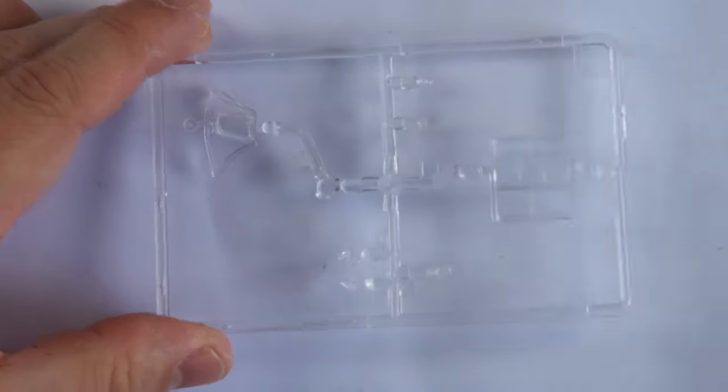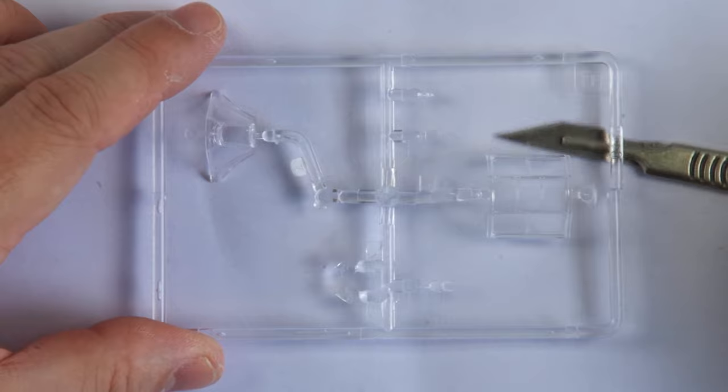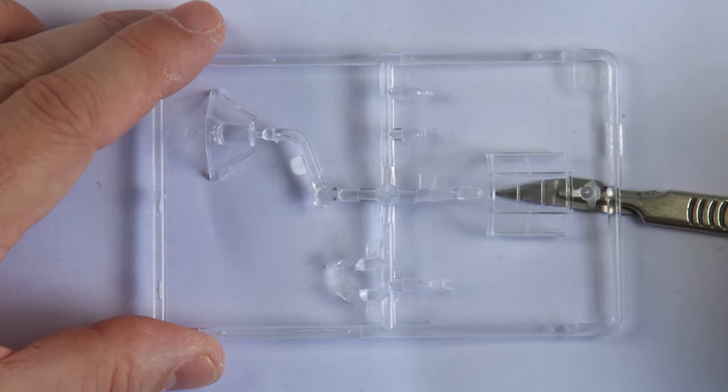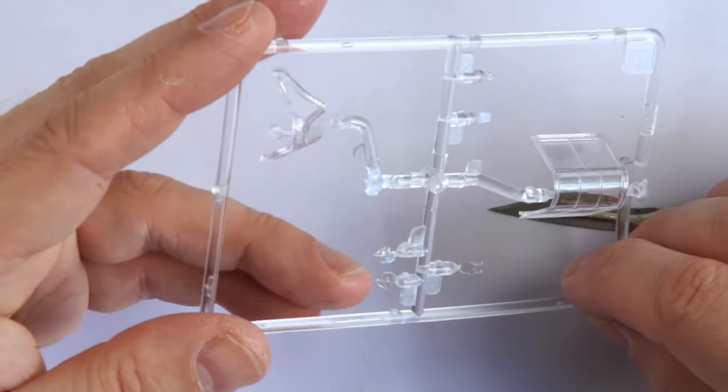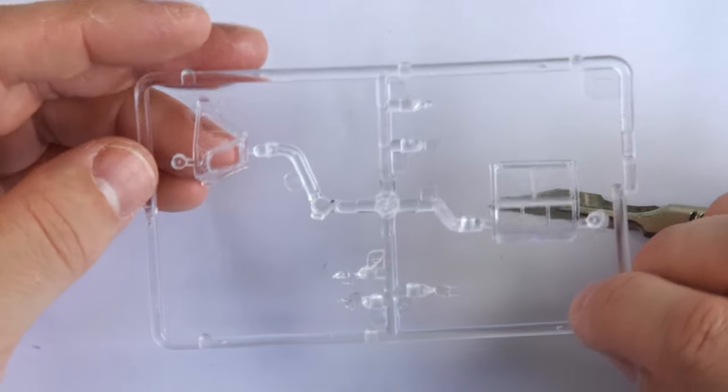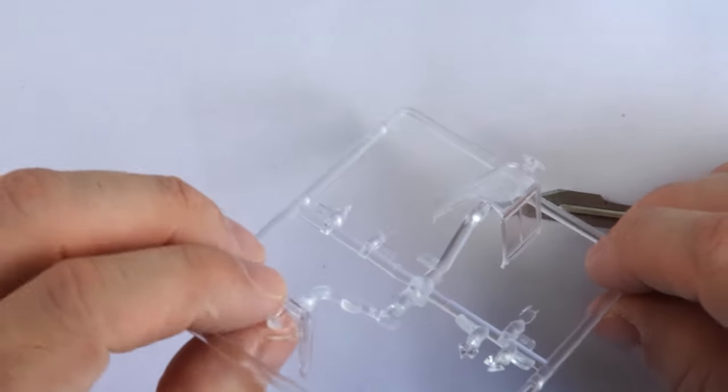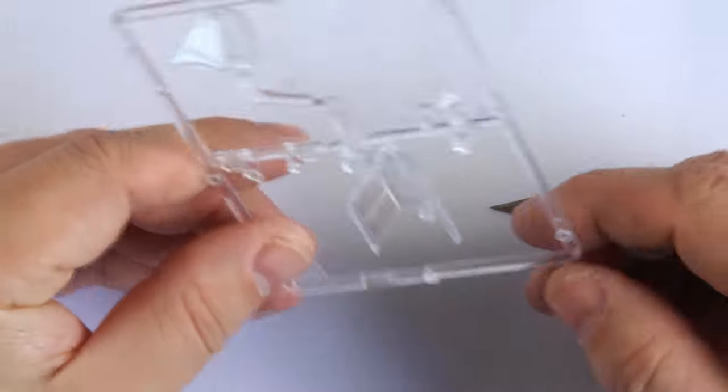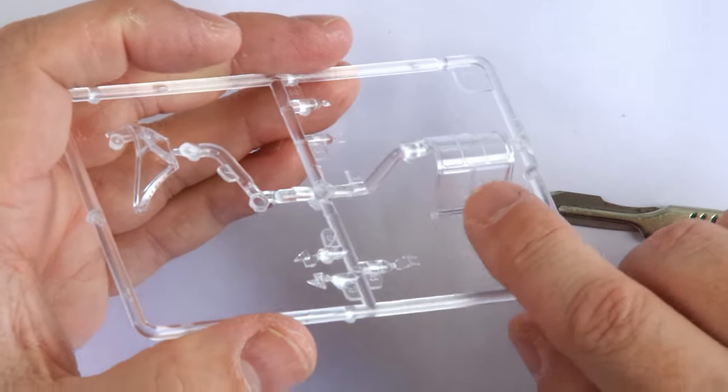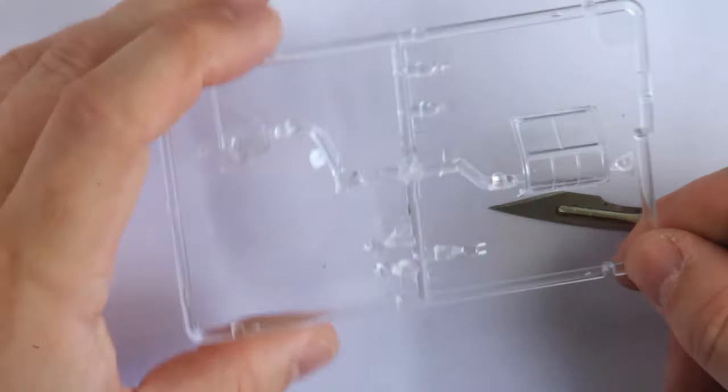Having a look at the transparency sprue, this is nice and clear. Though the large amount of framing in the Folgore didn't exactly give it ideal visibility. The transparency is a reasonable thickness, and it also contains other clear parts for the navigation lights and gunsight.